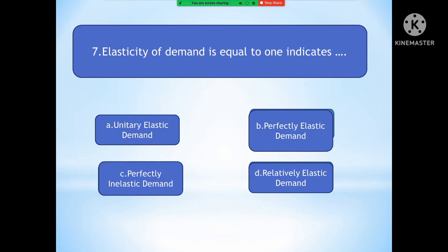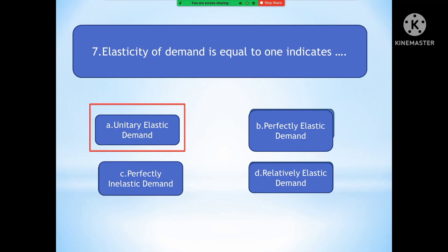Question number seven: Elasticity of demand equal to one indicates? Option A is Unitary Elastic Demand. Option B is Perfectly Elastic Demand. Option C is Perfectly Inelastic Demand. Option D is Relatively Elastic Demand. The right answer is Unitary Elastic Demand. There are five types of elasticity: More Elastic, Less Elastic, Unitary Elastic, Perfectly Inelastic, and Perfectly Elastic. This is a very important topic in Consumer Behavior Theory.